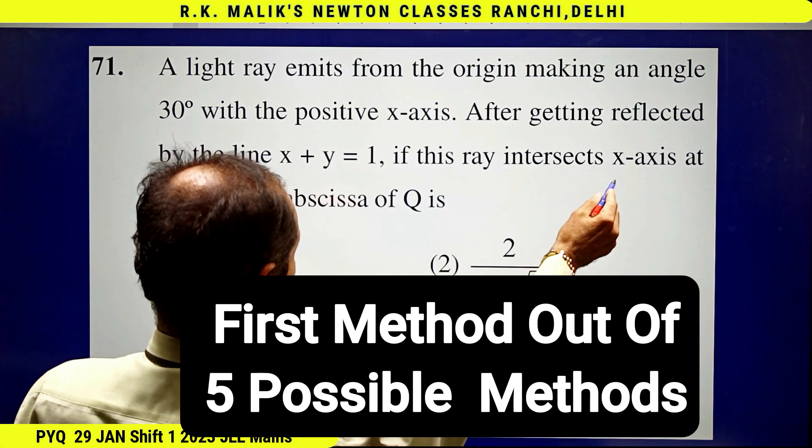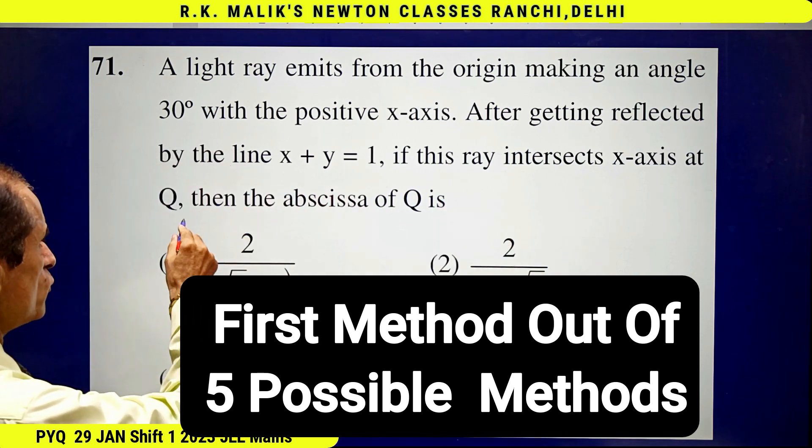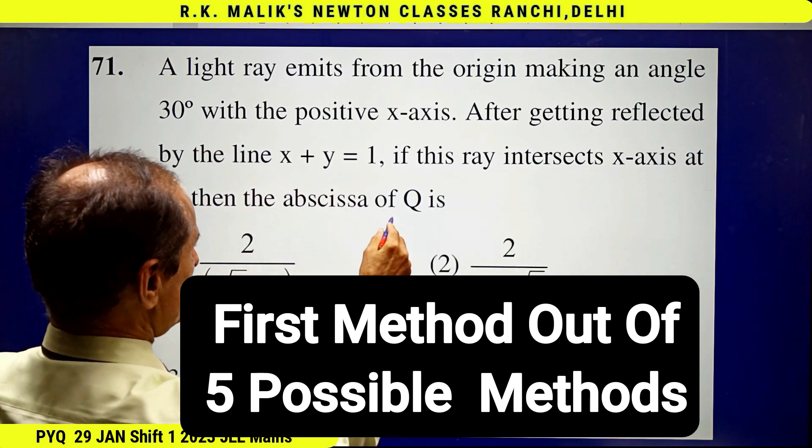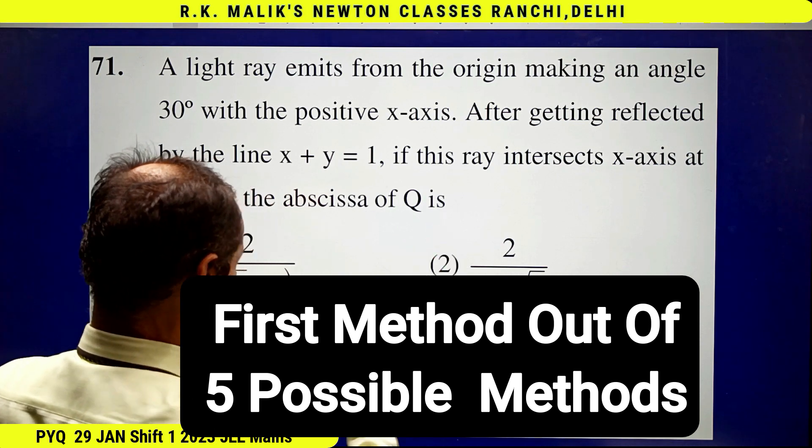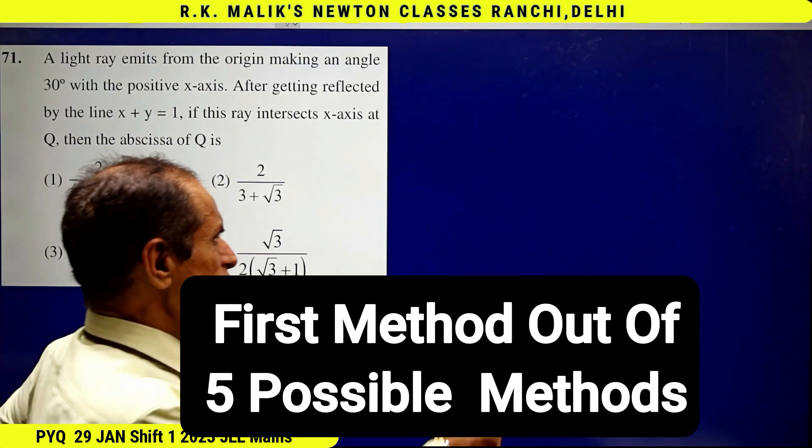If this ray intersects the x-axis at the point Q, then the abscissa of Q is what you have to find. You need to find the correct choice.